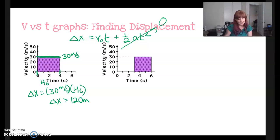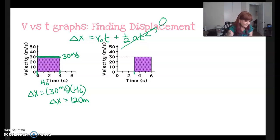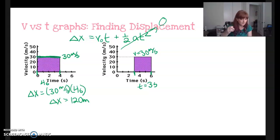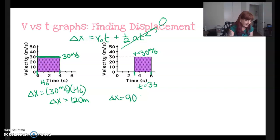We could also have a situation where the time interval is shifted — say it starts at 3 seconds and ends at 6 seconds, so the time interval is 3 seconds. Velocity is still 30 meters per second, there's no slope so no acceleration. Our displacement is 90 meters.